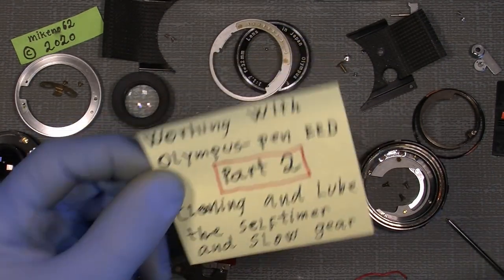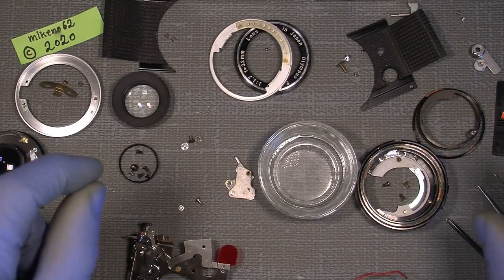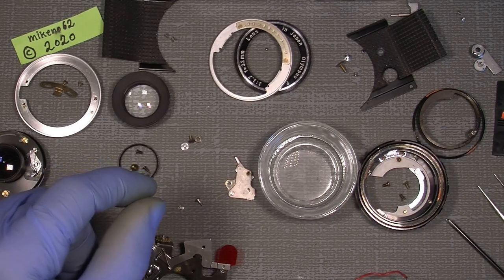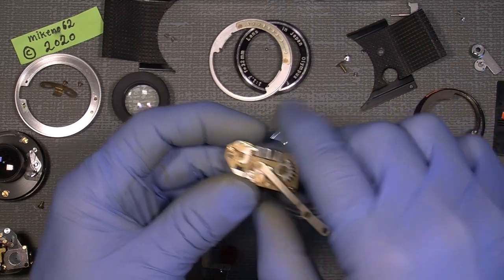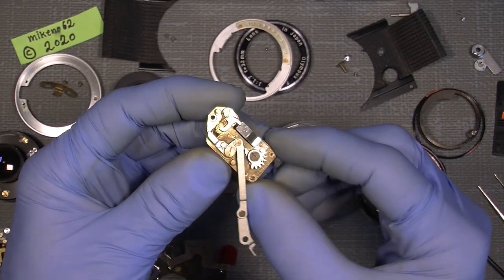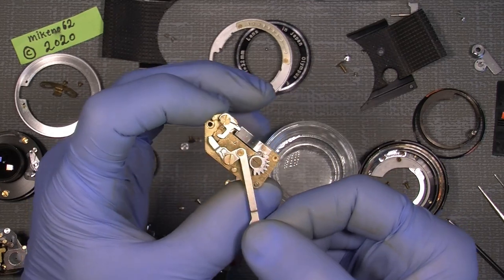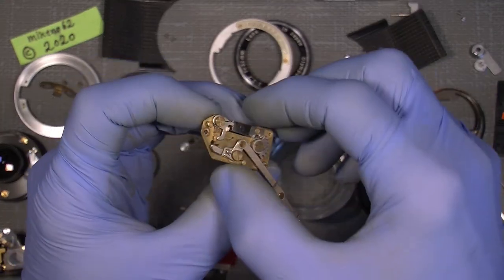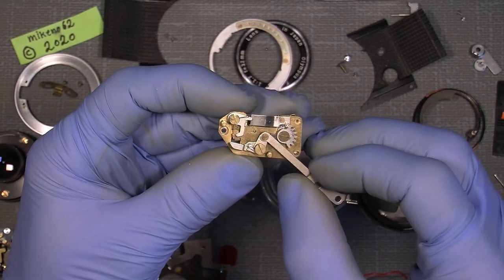As I mentioned in the first part, I will split up the whole process here. Let's just take the self-timer, which is a bit sticky. Some of the parts are a bit sticky because of probably old dry lube or oil or whatever they used in the past.